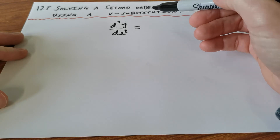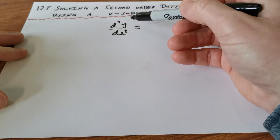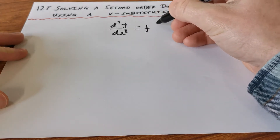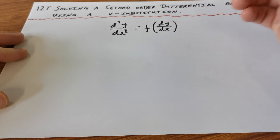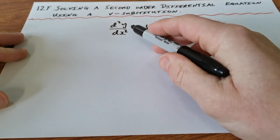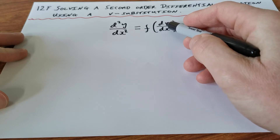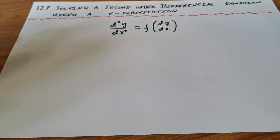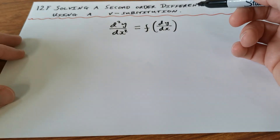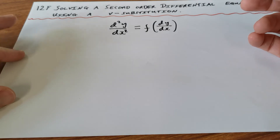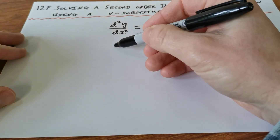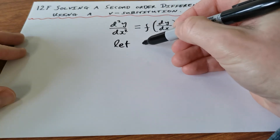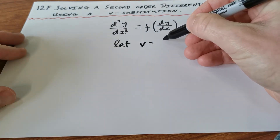We can use a V-substitution to solve second-order differential equations if the equation is in a specific form — in other words, if the second derivative is a function of the first derivative, then we can use a V-substitution. What we do with the V-substitution is just let V equal dy/dx.